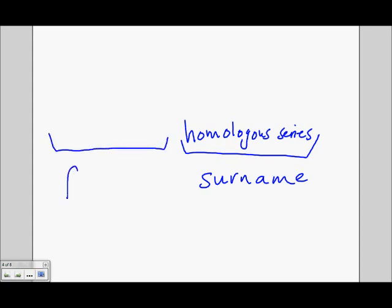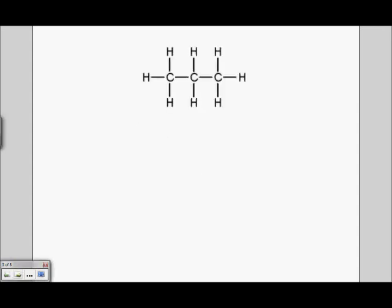Each organic compound has a surname which defines its homologous series and then it has a first name which distinguishes it as a unique member of that homologous series. The first name is derived by counting the number of carbon atoms in that particular compound. At a very simplistic level organic compounds are named with a first name which refers to the number of carbon atoms and then a surname which refers to the homologous series.